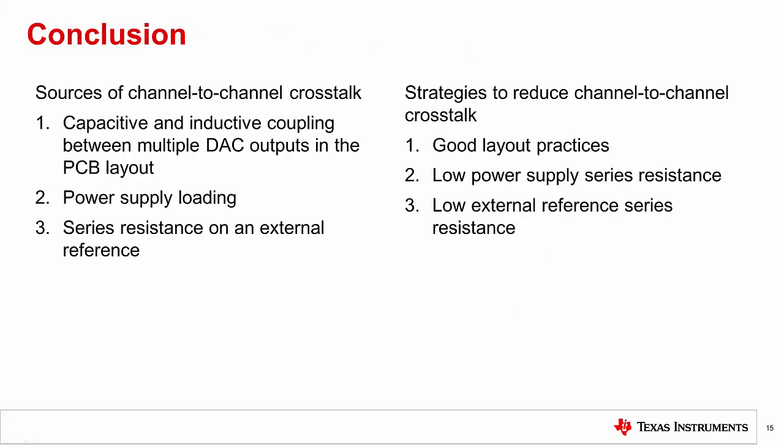Okay, so in summary there are three primary sources of channel-to-channel crosstalk. The first is capacitive and inductive coupling between multiple DAC outputs in the PCB layout. The second is power supply loading, allowing a voltage drop in the supply pin of the device when one channel's load changes. And the last is series resistance on the reference source. This resistance reduces the reference voltage for all channels when the load on the reference changes.